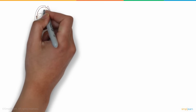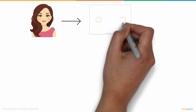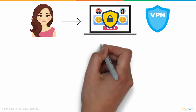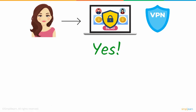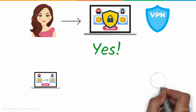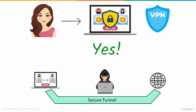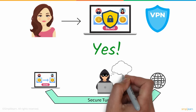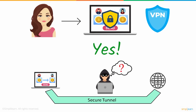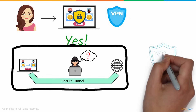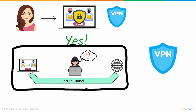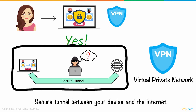So would Jude have been able to secure her transaction with the help of a VPN? Yes. Picture Jude's bank transaction happening in a tunnel that is invisible to the hacker. In such a case, the hacker will not be able to spot her transaction — and that is precisely what a VPN does. A virtual private network, more often known as VPN, creates a secure tunnel between your device and the internet.